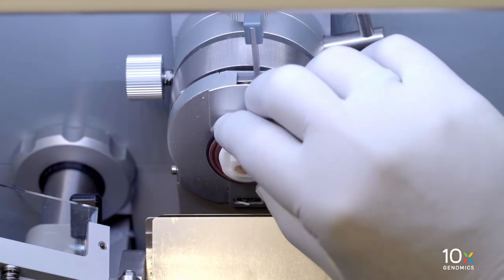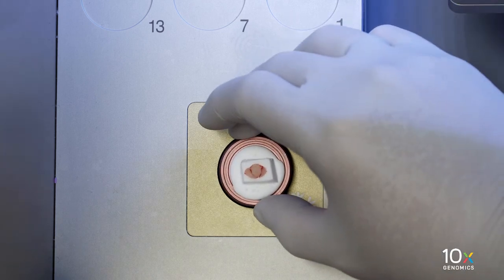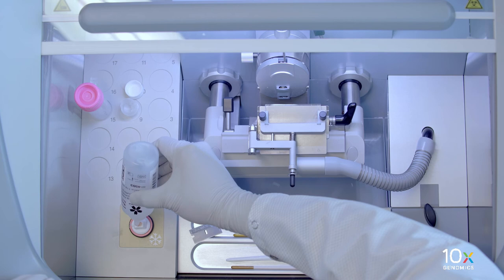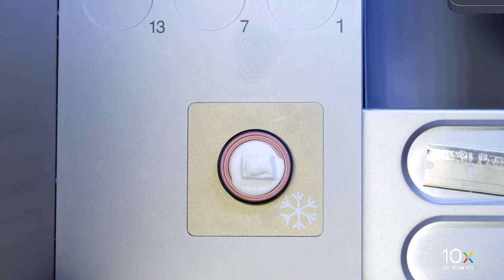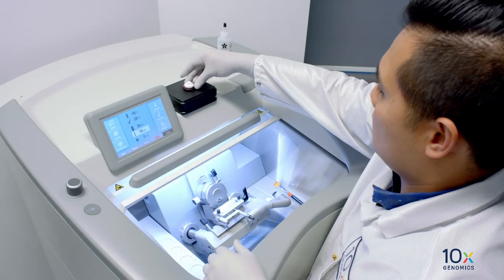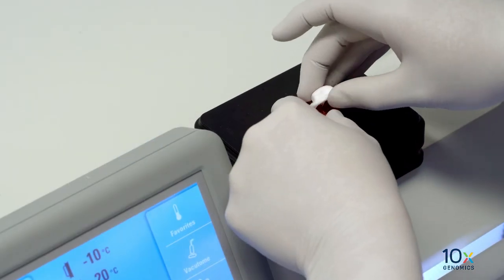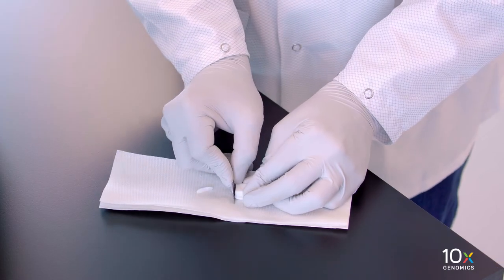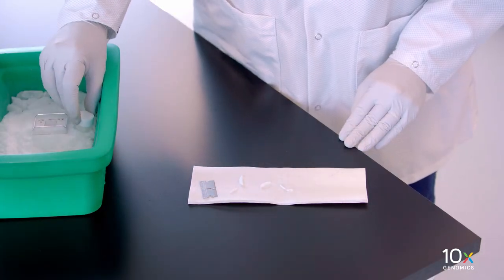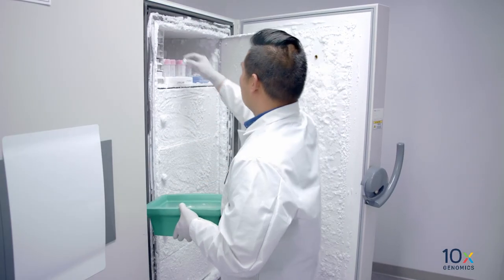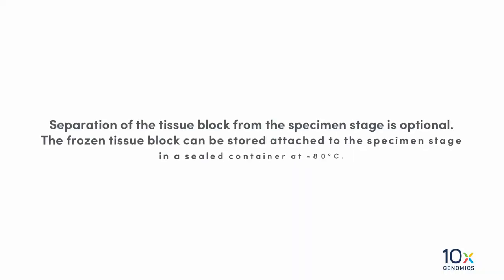Remove the leftover tissue block and specimen stage from the cryostat specimen head and place on the cryobar. Cover the exposed tissue with OCT and allow it to freeze. To separate the frozen tissue block from the stage, lift the tissue block and the stage from the cryobar and lightly warm the stage with your hands or an aluminum block at room temperature. If necessary, trim the tissue block to fit into a cryovial. Store in a sealed container at minus 80 degrees Celsius for long-term storage. Note: separation of the tissue block from the specimen stage is optional. The frozen tissue block can be stored attached to the specimen stage in a sealed container at minus 80 degrees Celsius.